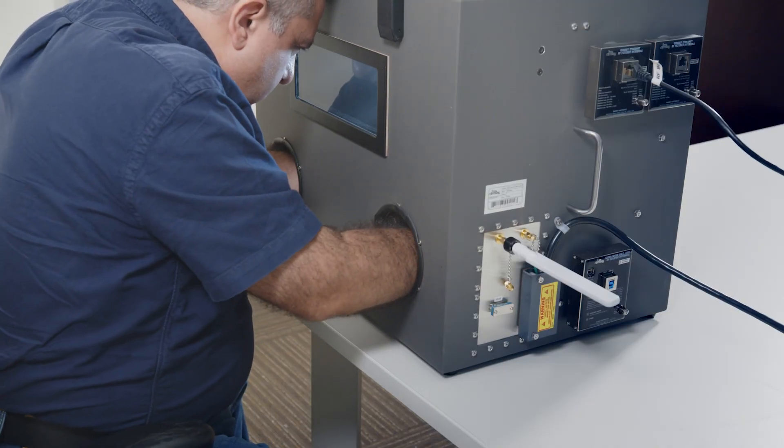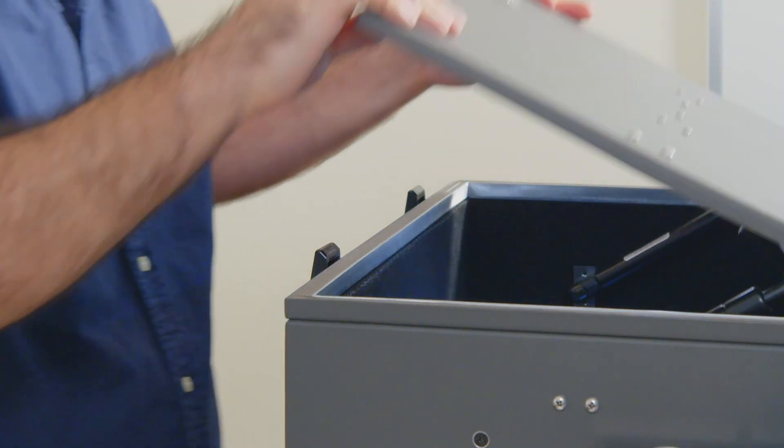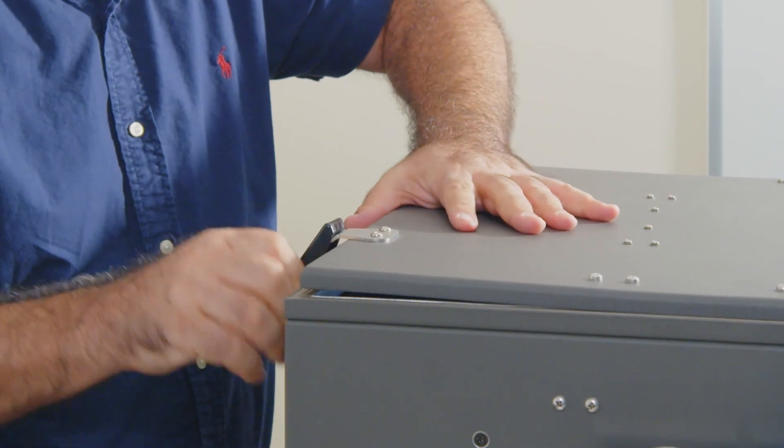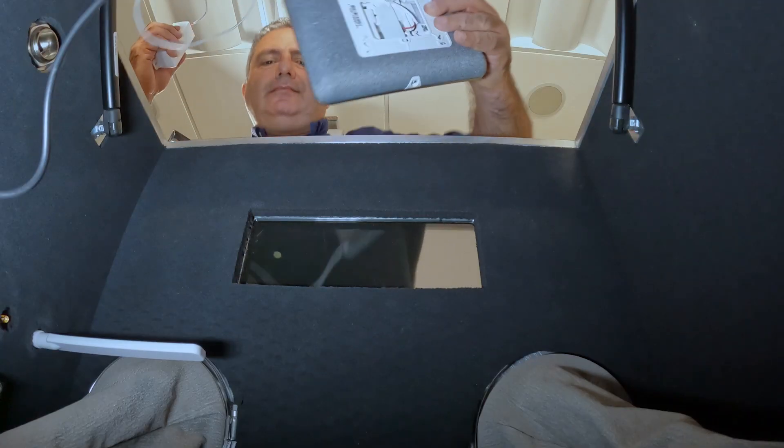Part of what we do for that testing is to validate the signal strength. As an example, some of our test requirements include a cell radio with no cell tower attachment. We can put it in this box, close the lid on the box, and the radio cannot connect to the tower.